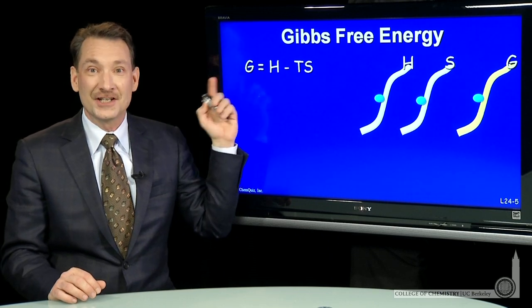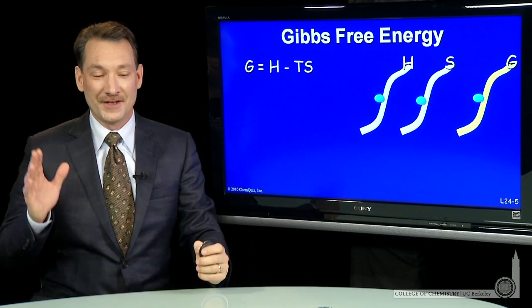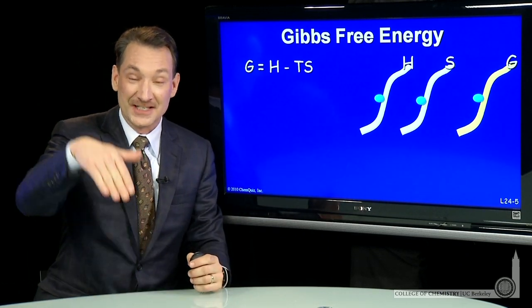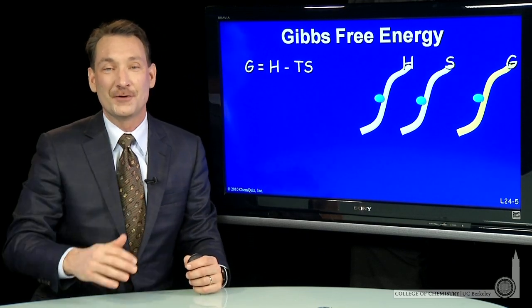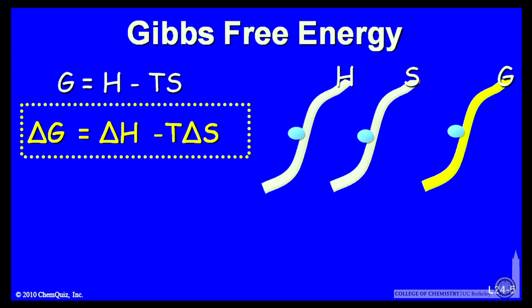If there's a change in Gibbs free energy, if there's a negative change, if there's a downhill direction for Gibbs free energy, that's the favored direction for a chemical process or a physical process. So delta G is delta H for the system minus T delta S for the system.